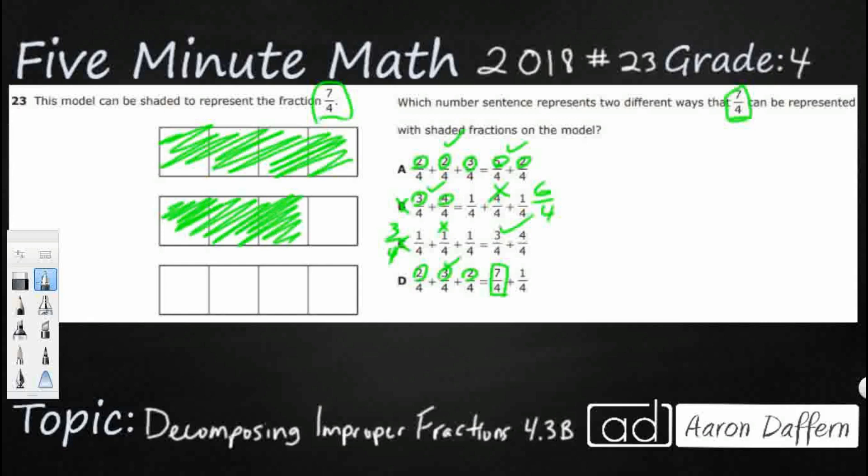So there's my 7 fourths. There's my 1 fourth. It doesn't work because that makes 8 fourths. And we're not looking for 8 fourths. We're looking for 7 fourths. So the only one that really works here is going to be A because you've got two different ways to break it down. You've got 2 fourths and 2 fourths and 3 fourths. And then you've got the 5 fourths and 2 fourths.